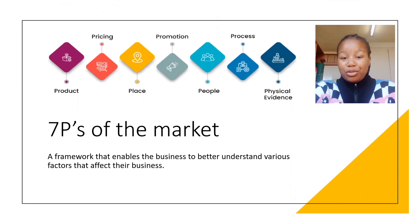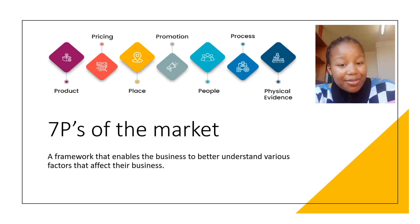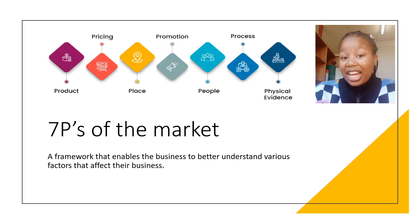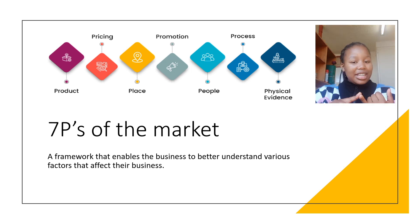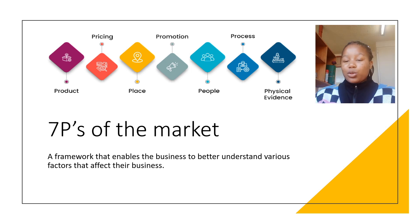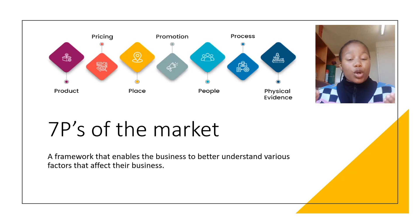Next, we're going to move to the seven Ps of marketing. The seven Ps are a framework that enables the business to better understand various factors that affect the business. The first is the product — the service or good that the business would be selling to its customers. Secondly, it is pricing: what is the business selling its product at, and what is the worth that the business is attaching to its asset?